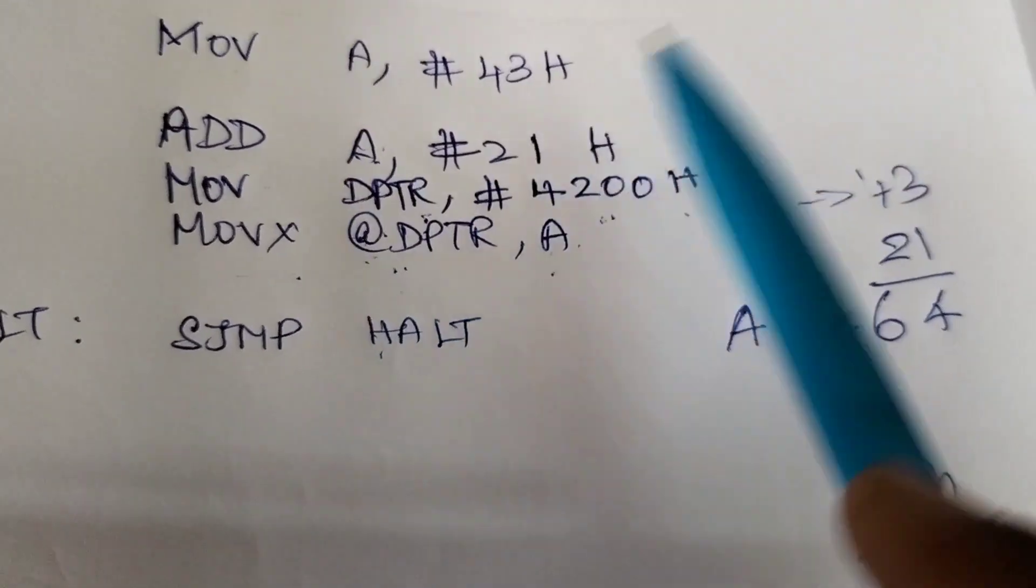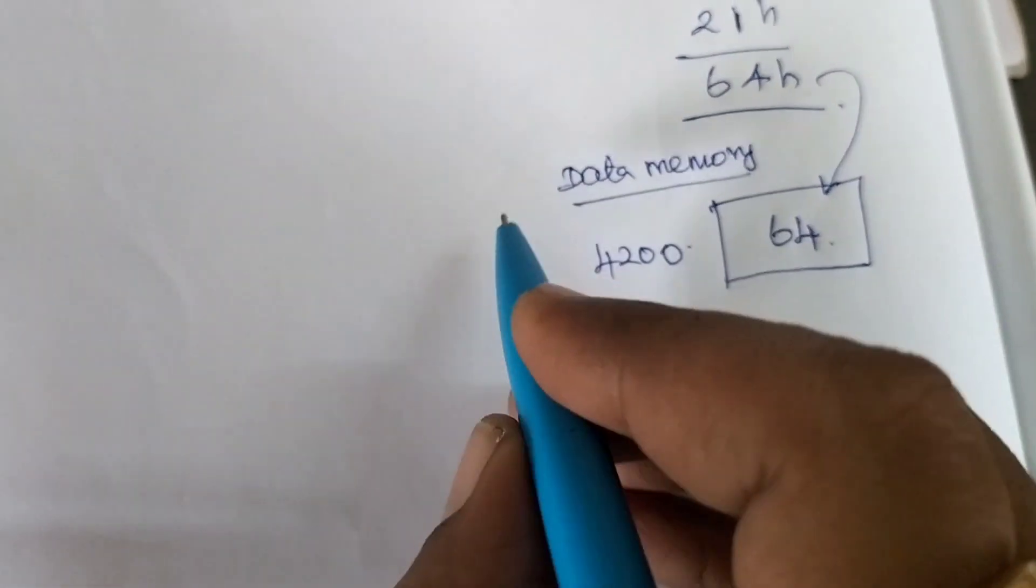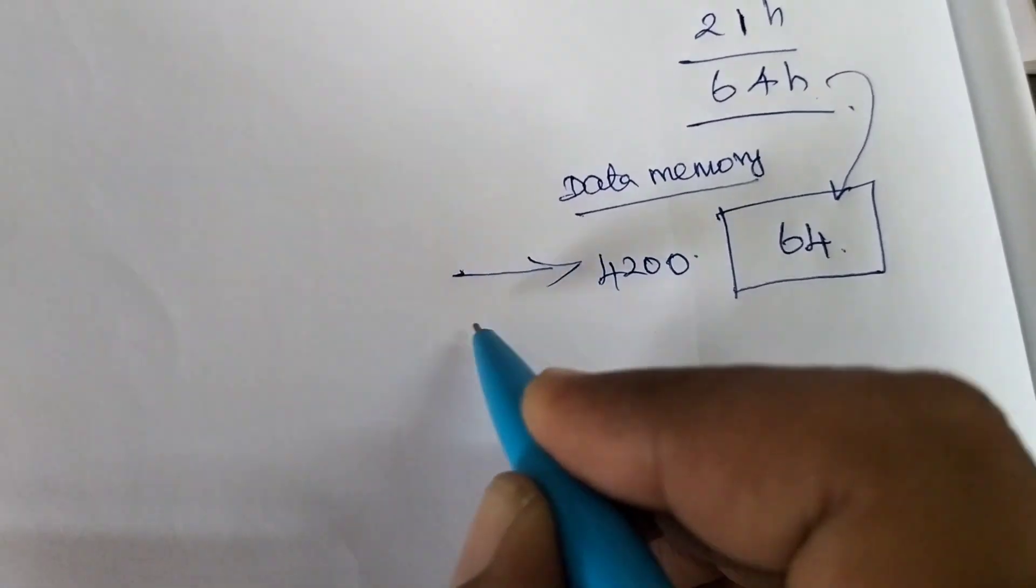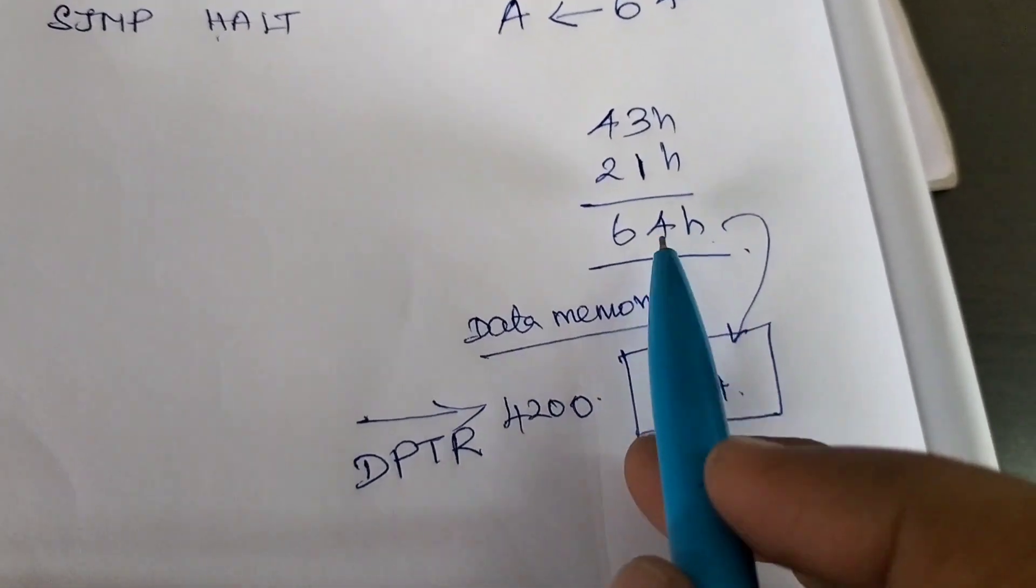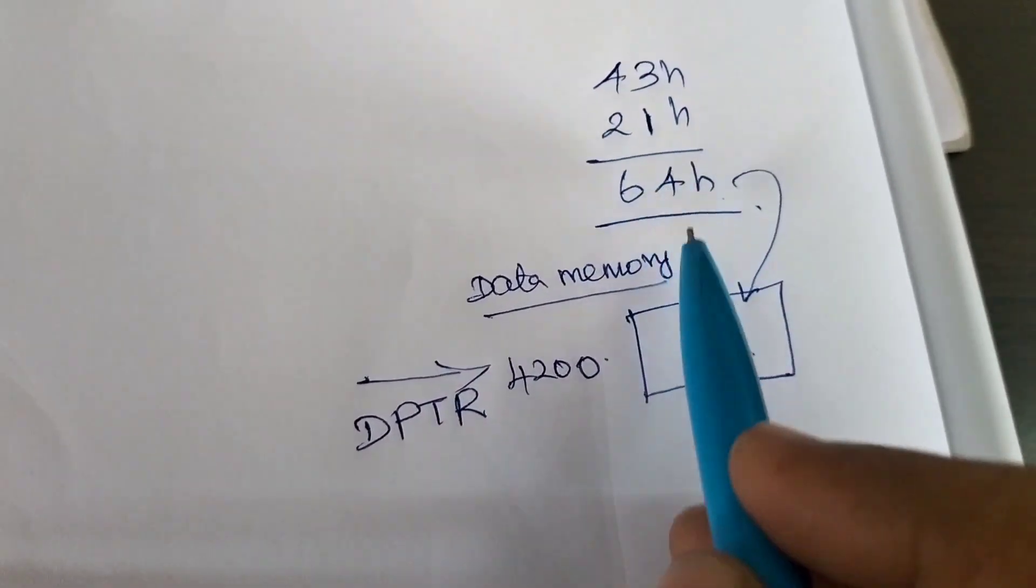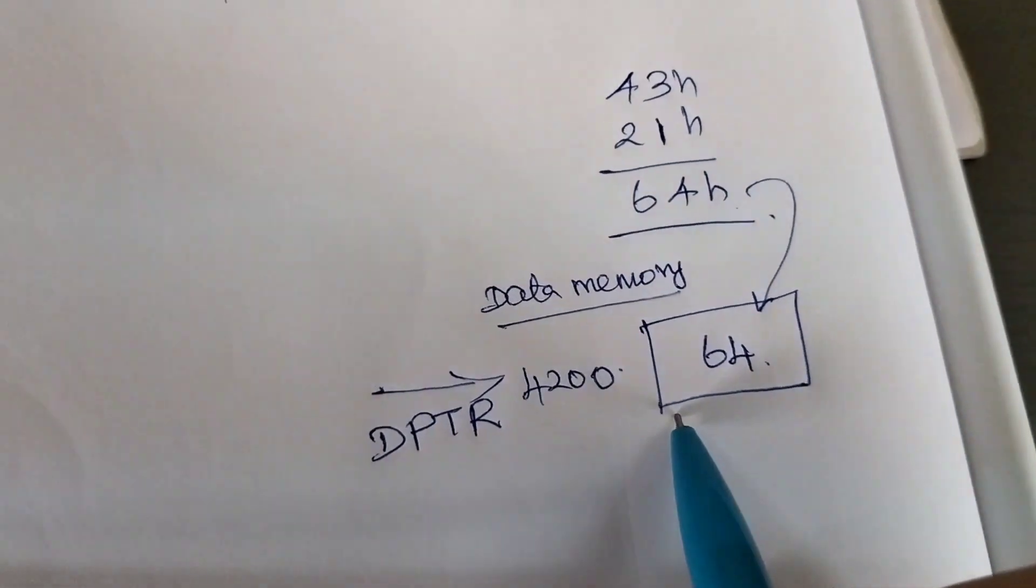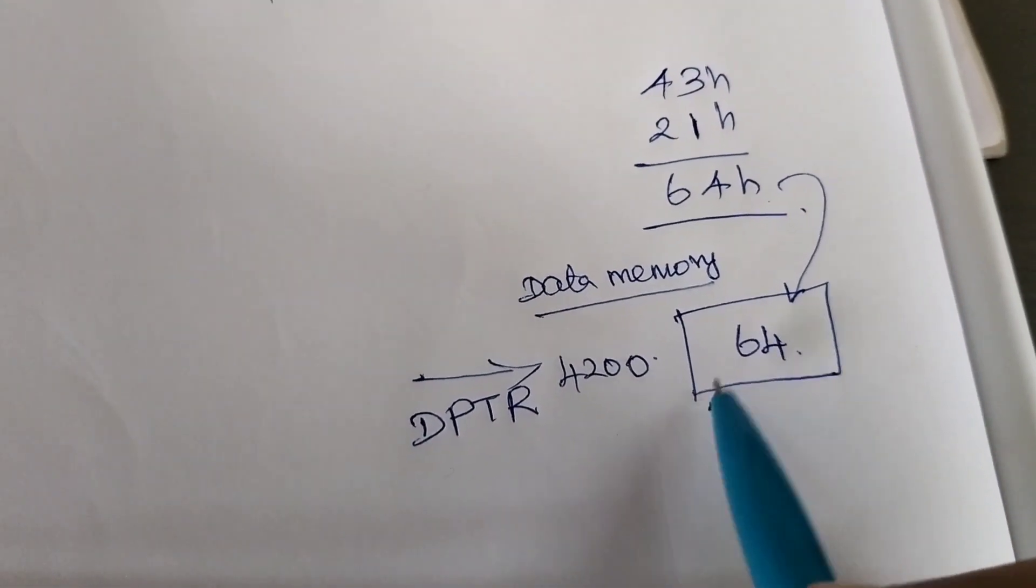So where is DPTR pointing out? DPTR is pointing out to this location, that is 4200. So whatever the added value, it will be loaded into the data memory, that is 4200.